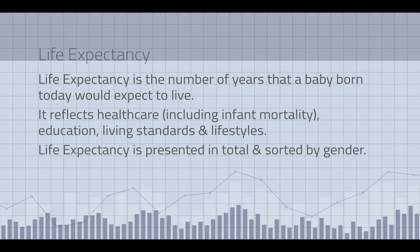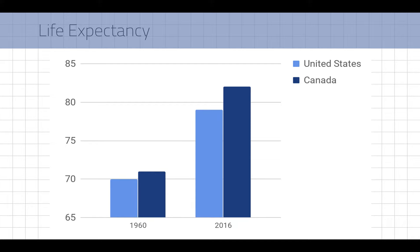Life expectancy refers to how many years someone born today would be expected to live. It's affected by health care — including infant mortality rates, which knock down the average age — as well as education, because better education leads to a better job and more money. It also includes lifestyle factors and even crime or violence in the country. It's interesting to compare life expectancy over time.